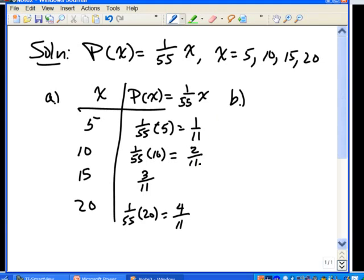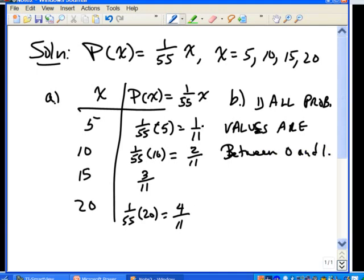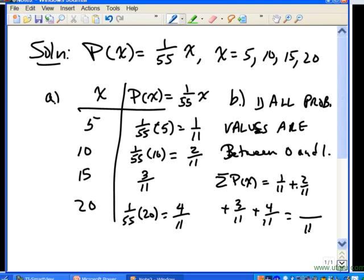Now in part B, we can do that over here. We can test the two criteria. First, all probability values are between 0 and 1, so the first criteria is met. Now the second one: if we add up all the probability values, that means we want to add up 1/11 plus 2/11 plus 3/11 plus 4/11. They all have a common denominator, so that makes it easy. The denominator in the answer is going to be 11. So if we just add up the numerators, we have 1 plus 2 plus 3, that's 6, plus 4, that's 10.